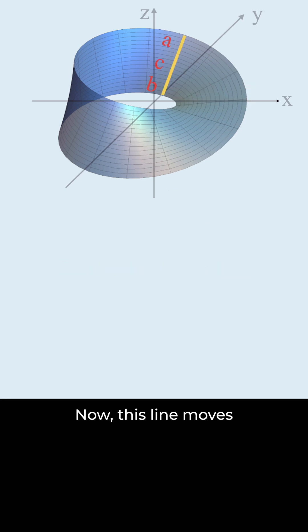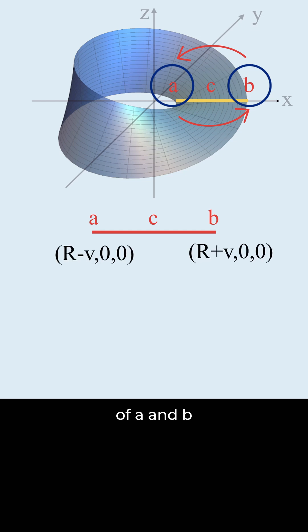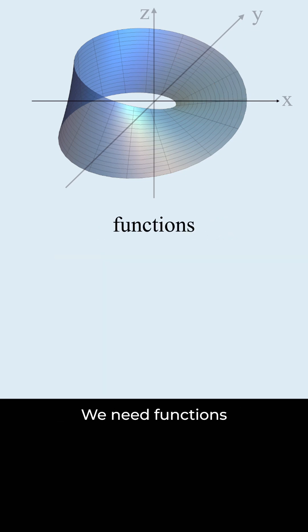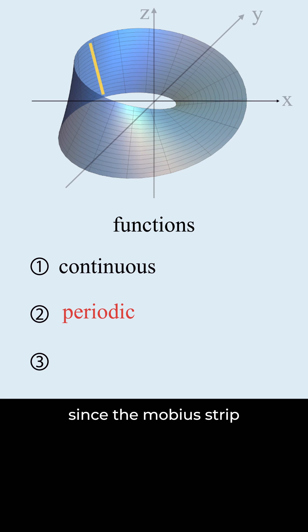Now, this line moves while rotating. After one full rotation, the positions of a and b must be swapped. The x-coordinate values of a and b must change accordingly. We need functions that have these properties: It must be continuous, it must be periodic since the Möbius strip moves around, and it must be symmetric so that the positions of a and b swap correctly.